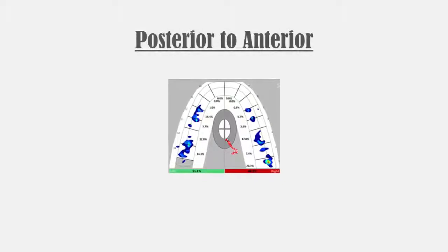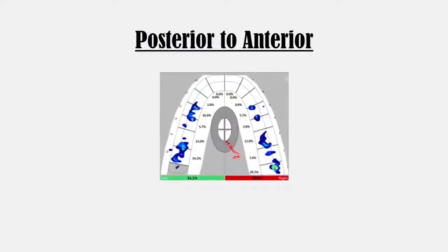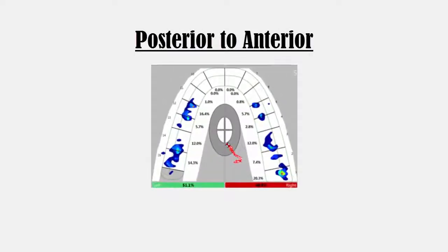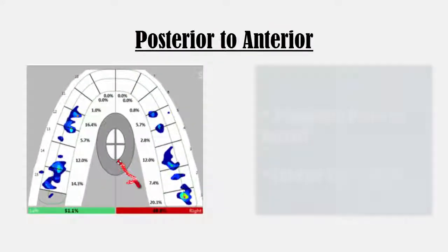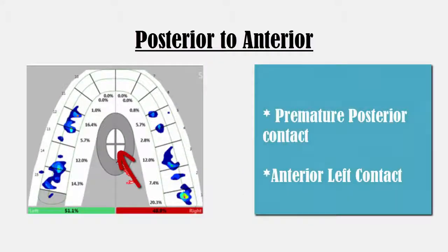The third example shows the center of force starting from the right posterior and moving anteriorly towards the middle of the arch. This center of force pattern demonstrates a premature posterior right side contact followed by an anterior left contact, which causes the trajectory path to move diagonally from the right posterior to the left anterior teeth.